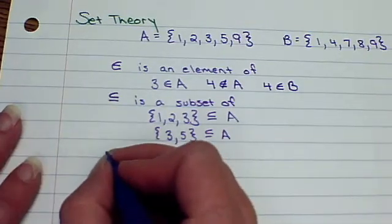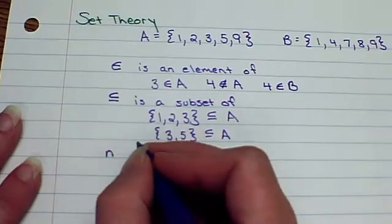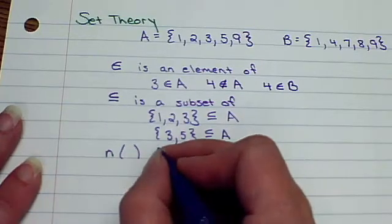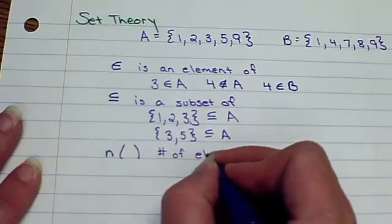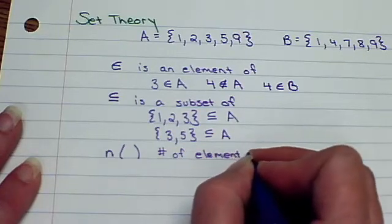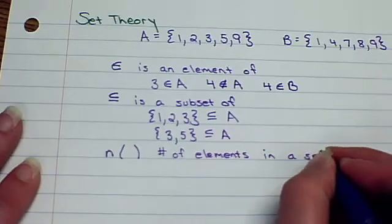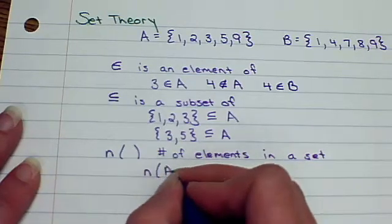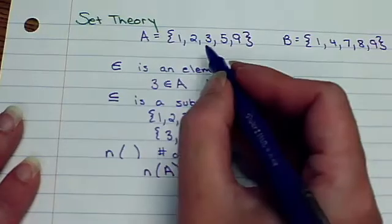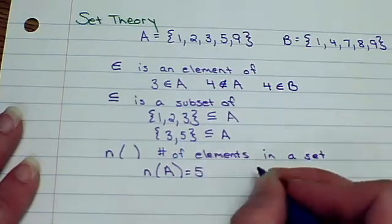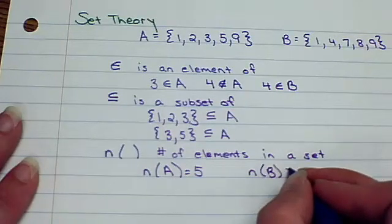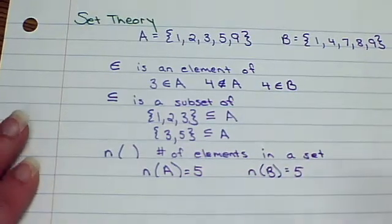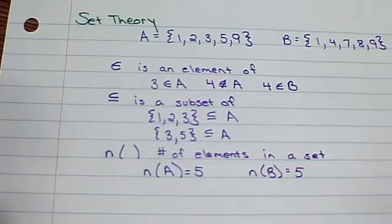Another notation, a little n. This means the number of elements in a set. So the number of elements in A, 1, 2, 3, 4, 5, would be 5. The number of elements in B is also 5. Just because they have the same number of elements, does it mean the sets are the same? No, it doesn't.